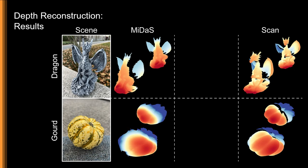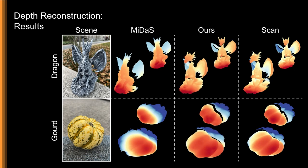By leveraging the parallax information from a single long-burst capture, and with no other training data, our approach can recover the object detail to a much closer approximation of the ground-truth scan.